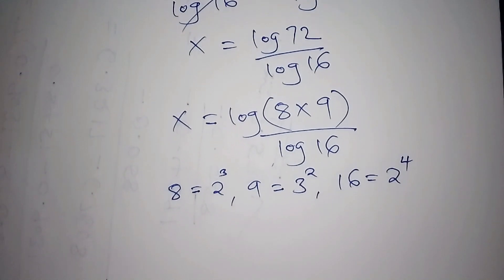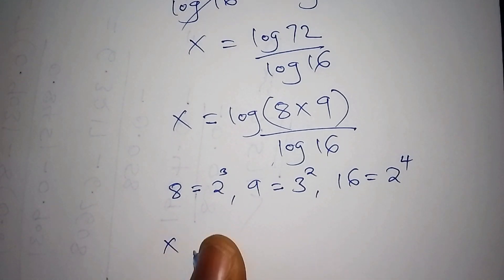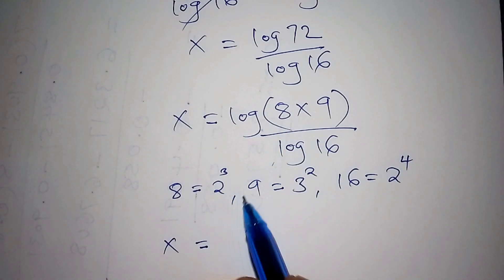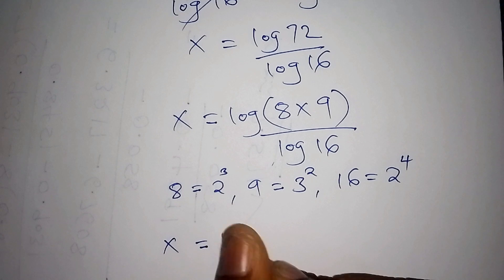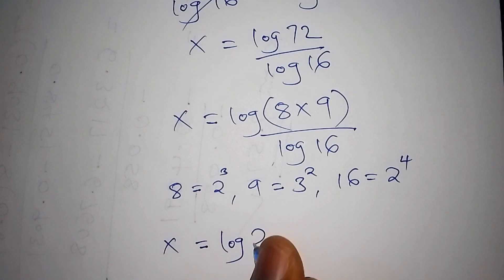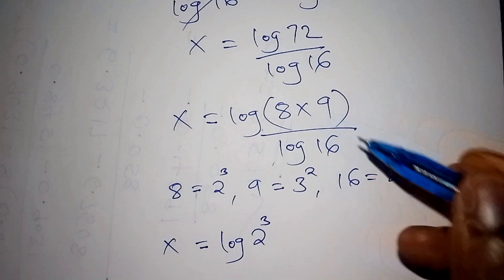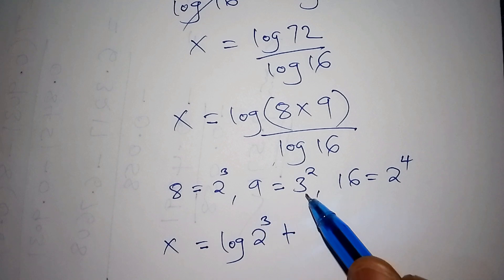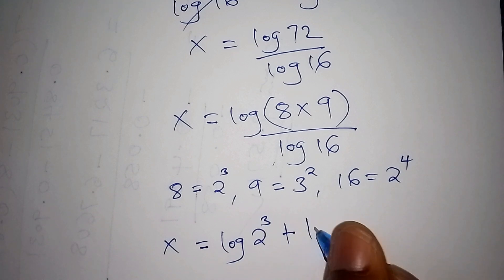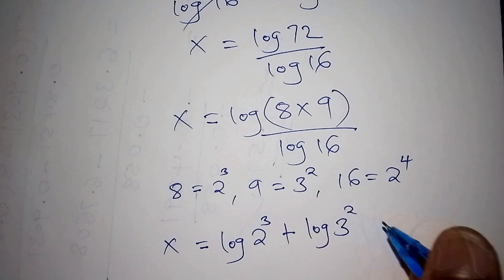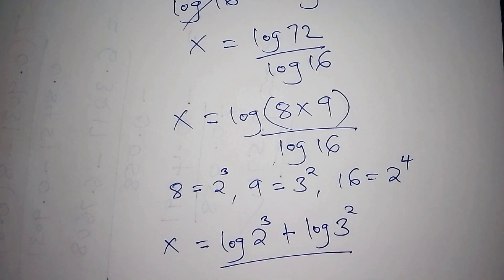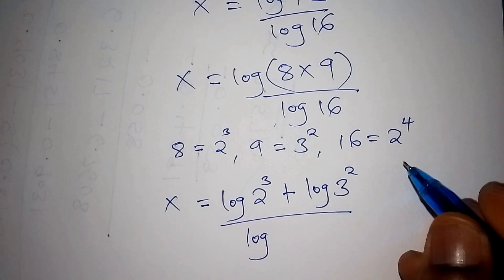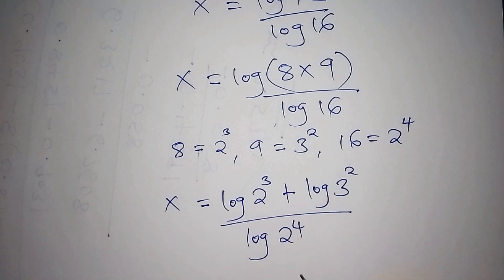Now we proceed. Our x is equals to: the log of 8 becomes log of 2 to the power of 3, plus the log of 9 becomes log of 3 to the power of 2, all over the log of 16, which is the log of 2 to the power of 4.